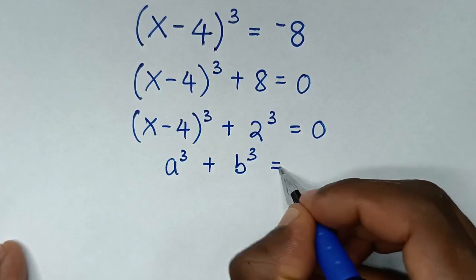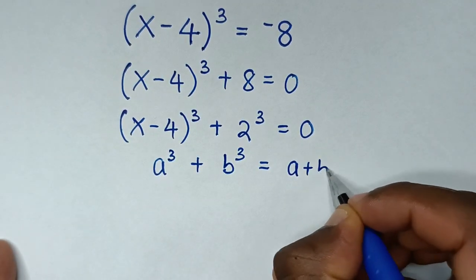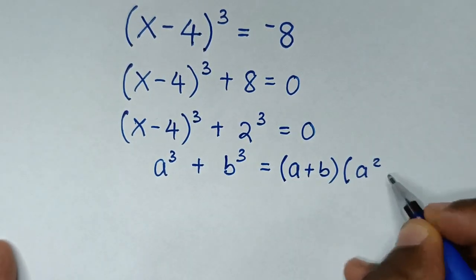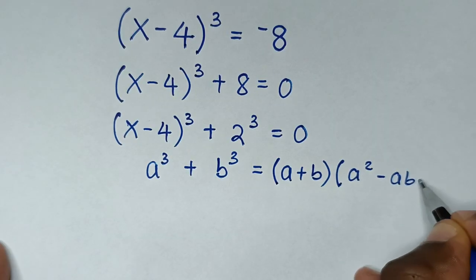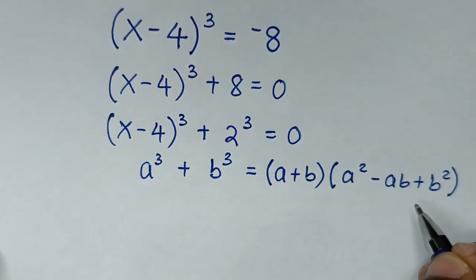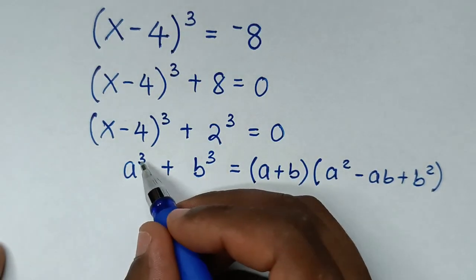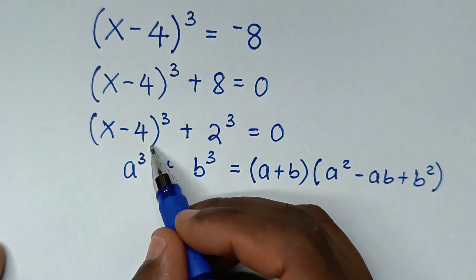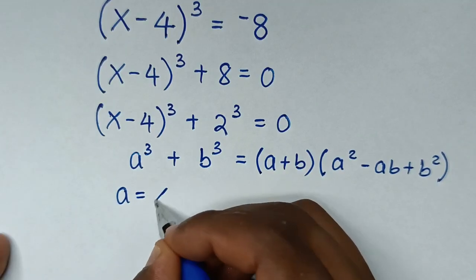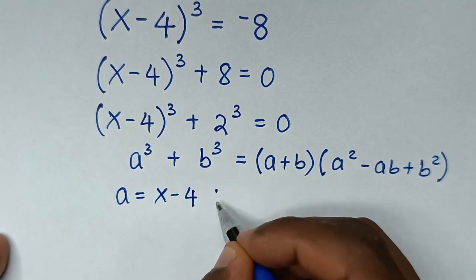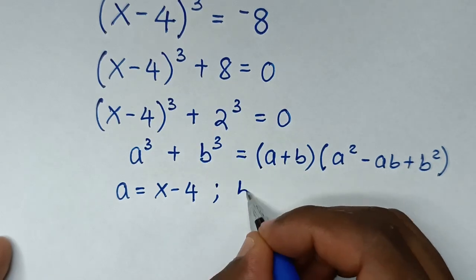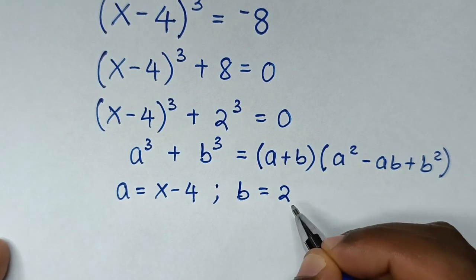The sum of cubes rule is: a³ + b³ = (a + b)(a² - ab + b²). Comparing a³ with (x - 4)³, we get a = (x - 4). Comparing b³ with 2³, we get b = 2.